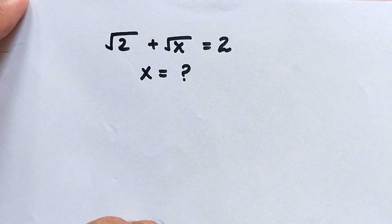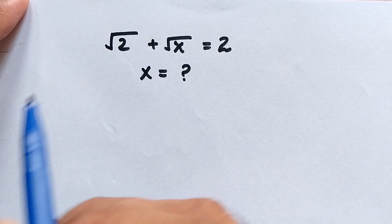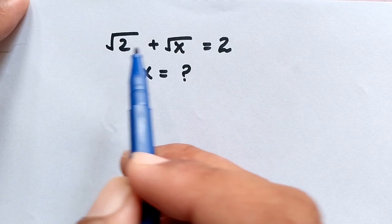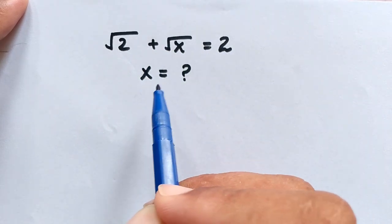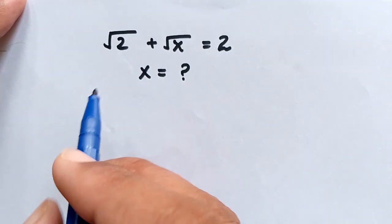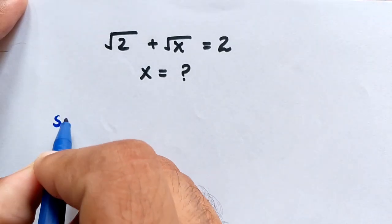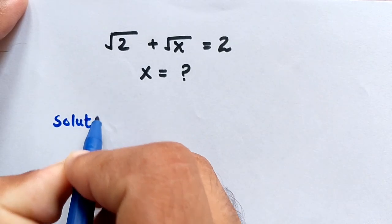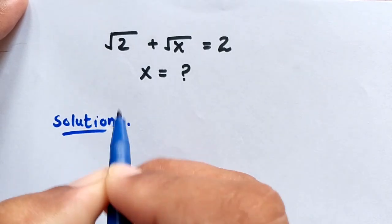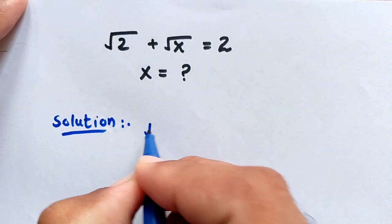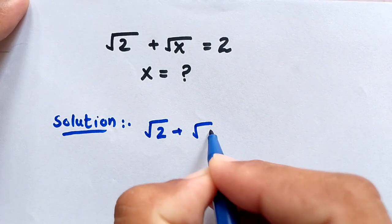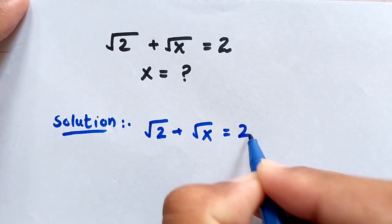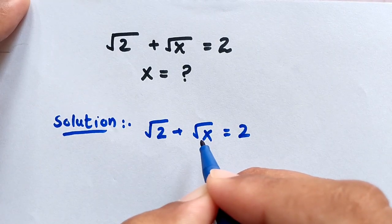Hello, you are welcome. Today we have to solve the most interesting question: square root of (2 plus square root of x) is equal to 2, and we have to find the value of x.